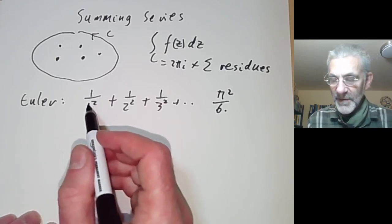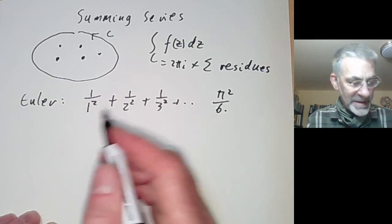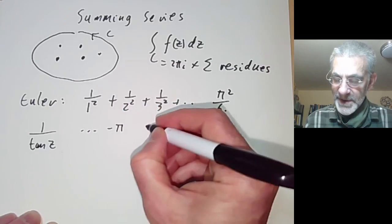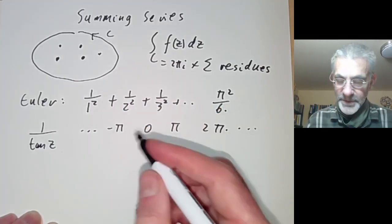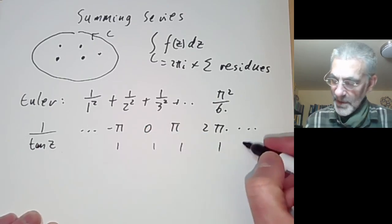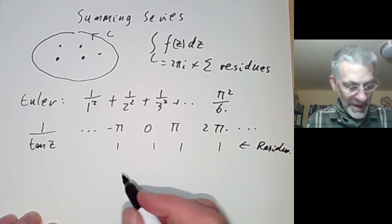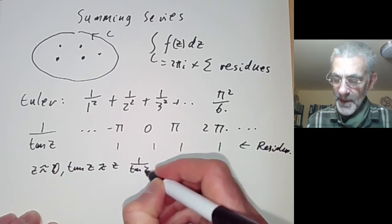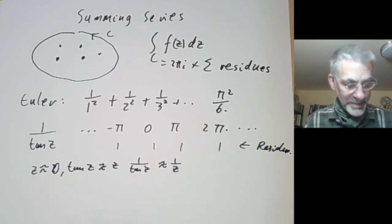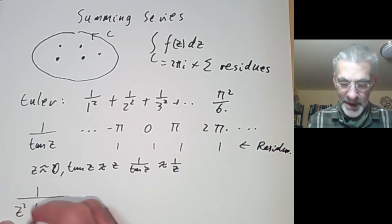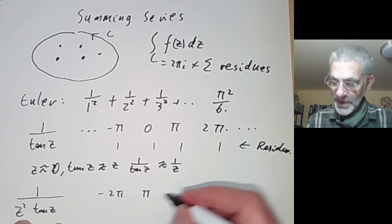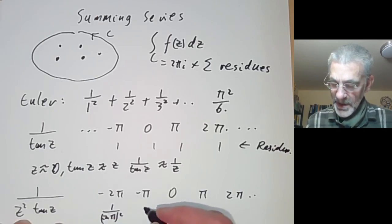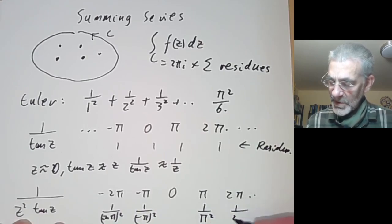The idea is as follows. We try to find a function whose residues are more or less given by these terms. We can take 1/tan(z), which has singularities at points …, −π, 0, π, 2π, …, all multiples of π, and the residue at these points is always 1. That's because near z = 0, tan(z) ≈ z, so 1/tan(z) ≈ 1/z, which has residue 1. Now if we look at 1/(z²·tan(z)), the residues at these non-zero points will be 1/(−2π)², 1/(−π)², 1/π², 1/(2π)², and so on.